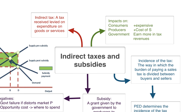Hello and welcome to this bite-sized economics video on indirect taxes and subsidies. What is an indirect tax? It's a tax levied on expenditure of goods or services, as opposed to a direct tax, which is a tax charged directly to an individual based on a component of income. So indirect tax is just levied on expenditure.